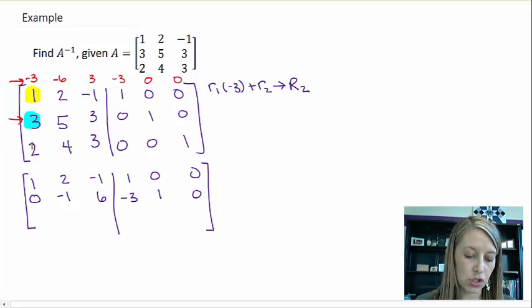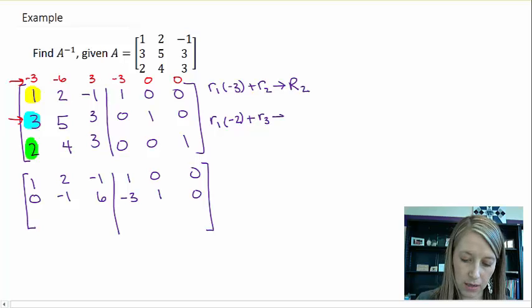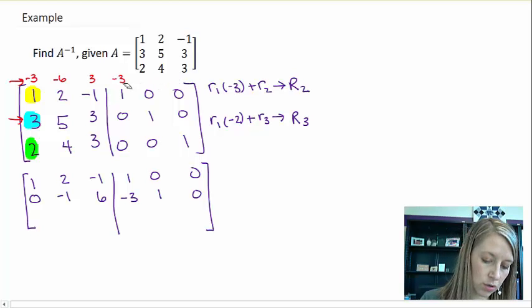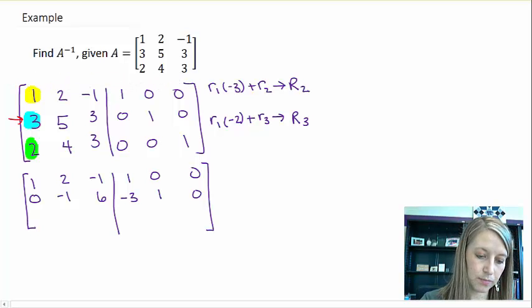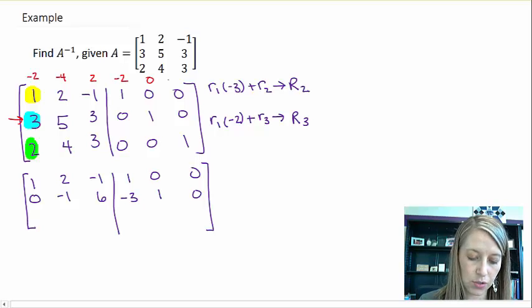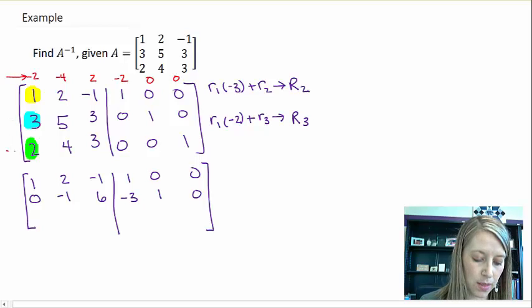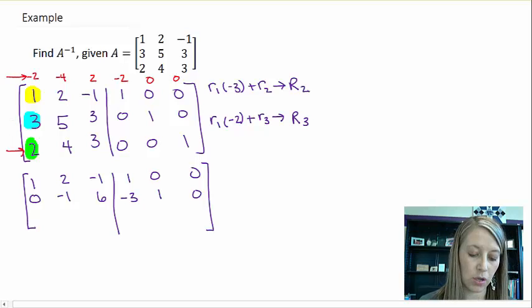And I also can actually get a 0 where this 2 is at the same time using the same method. So I take a row 1 times a negative 2 and add that to row 3. I'm going to replace that in row 3. So let me do a new scratch work here. 1 times negative 2 is negative 2. Negative 4, positive 2, negative 2, 0, and 0. And so when I add this row and this row, that becomes my new row 3.